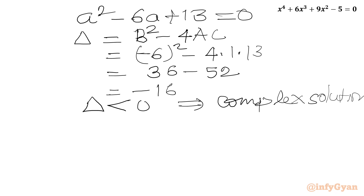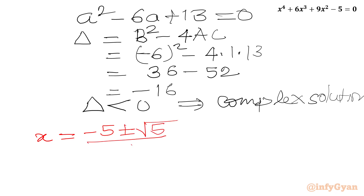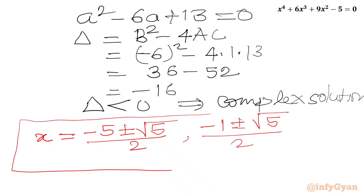So finally we have 4 real solutions: x = (−5 ± √5) / 2 and x = (−1 ± √5) / 2. I hope friends you will like this video. Thank you so very much for watching. Do not forget to like, share and subscribe. Bye bye till next video. Good luck. Take care.